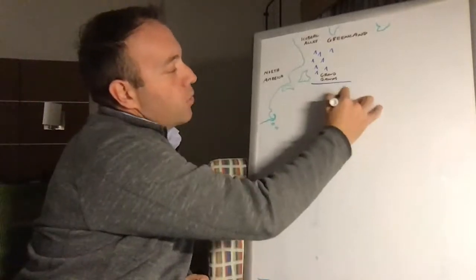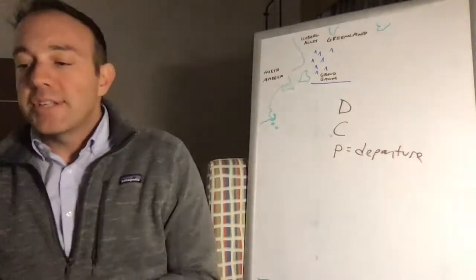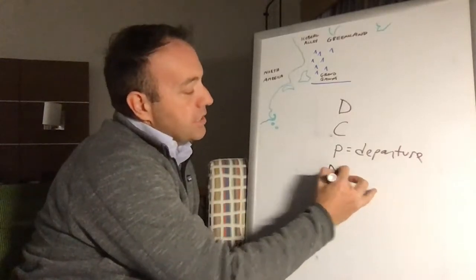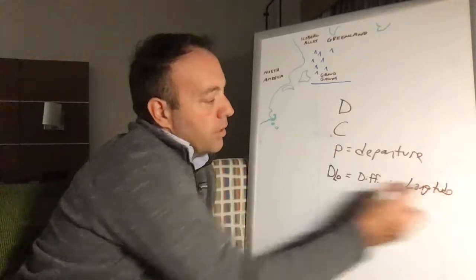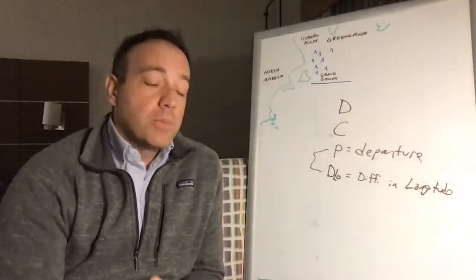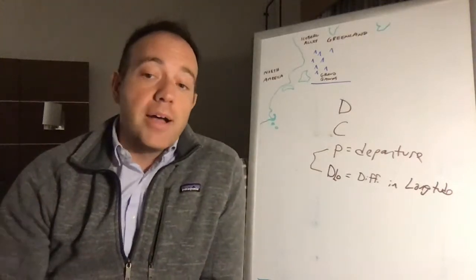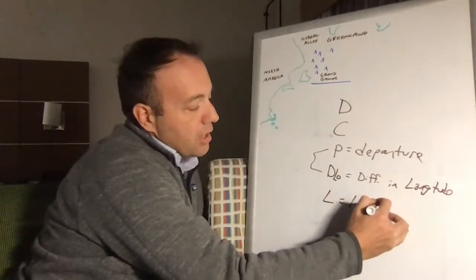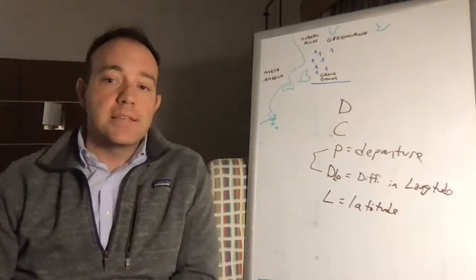Our terms so far: D for distance, C for course, P for departure — the distance between two meridians at a given latitude. D-low is the difference in longitude. Why are these not the same? Difference in longitude is a number of degrees, like longitude 10 to longitude 20 — the difference is 10 degrees. Departure is in nautical miles — it's a distance at that latitude. L is latitude.